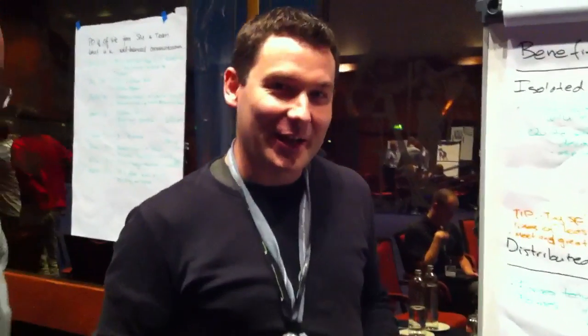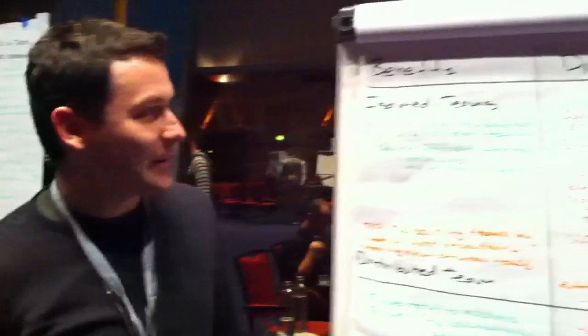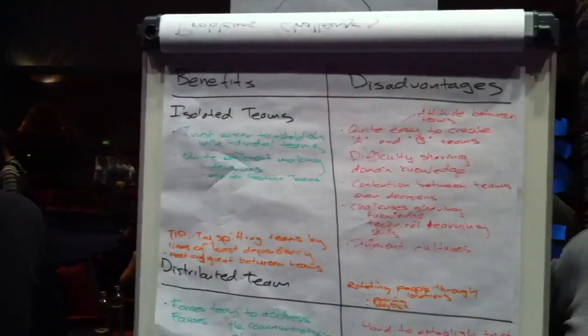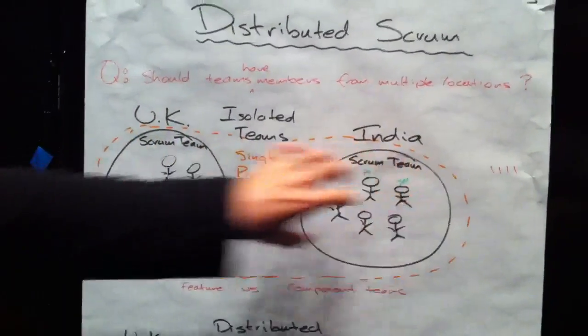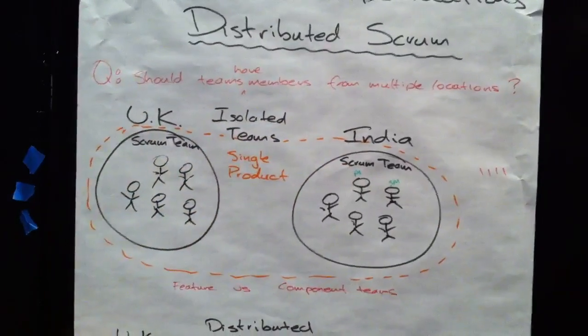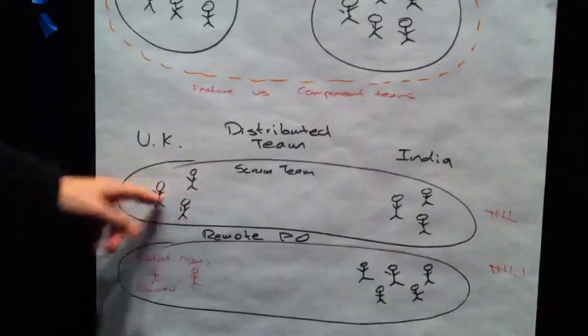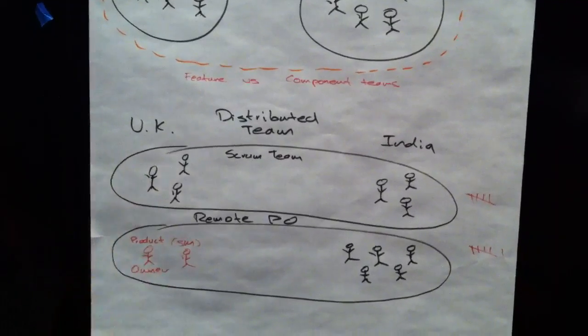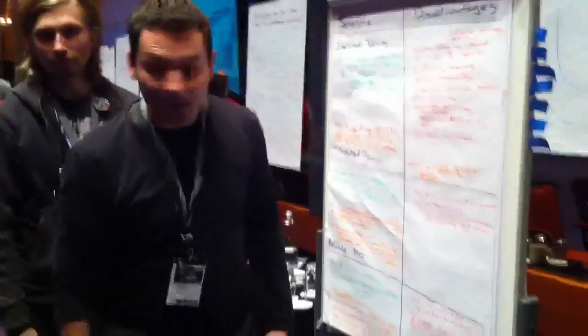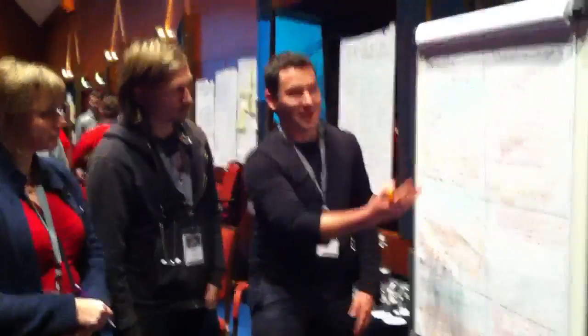We were talking about the challenges of distributed Scrum and looking at some different models. We looked at isolated teams — having independent Scrum teams located in different locations — managing the team boundary, distributed teams with a single Scrum team in multiple locations, and the case with a remote product owner and team members in a different location from the product owner. Here are some of the benefits and disadvantages of those three models.